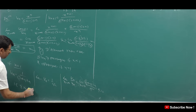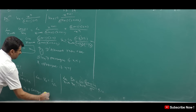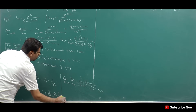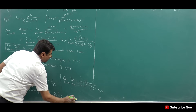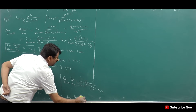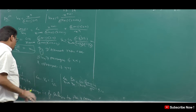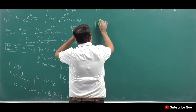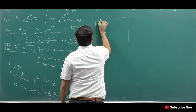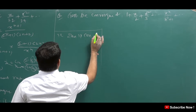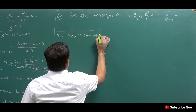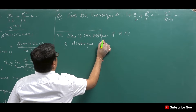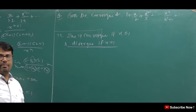Since summation v_n is convergent and by the comparison test, summation u_n is also convergent. So summation u_n is convergent if x is less than or equal to 1, and divergent if x is greater than 1.